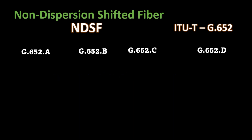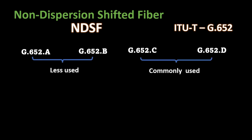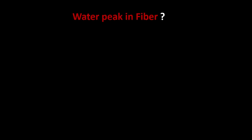Today, A and B categories are less used, while C and D are commonly used. The reason behind it is that A and B have a water peak, whereas C and D eliminate the water peak. You may be confused about what a water peak in fiber is.